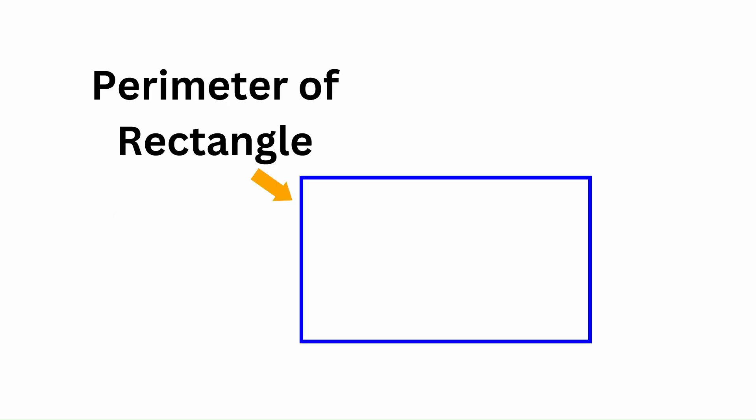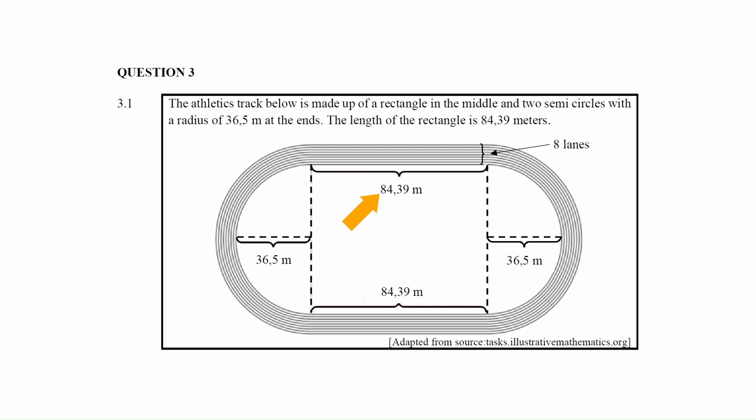The perimeter of a rectangle is the total distance around a rectangle. From the diagram, the length of the rectangular part of the track is 84.39 meters. The width is not given but can be calculated — it equals two times the radius of the semicircle part of the track.